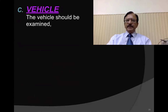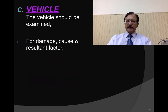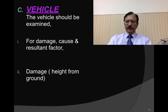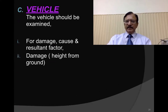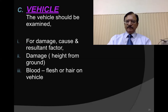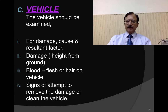The vehicle should be examined for damage, cause, and the resultant factor responsible for the accident. The damage and height from the ground should be measured, especially the bumper for victims of bumper fractures and the contact height of the vehicle. Any blood marks, flesh, or hair on the vehicle should be noted, as well as any signs of an attempt to remove damage or clean the vehicle.